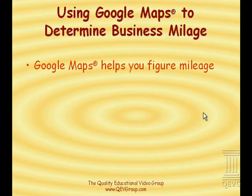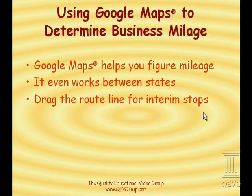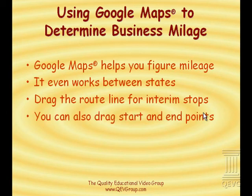So use Google Maps to help you figure out your business mileage even after you've made the trip. No need to panic ever again because you forgot to write down some deductible mileage. Just go to Google Maps and let them help you figure out what it was. Google Maps even works between states — for example, if you had a starting point in Maine and an ending point in Arizona, it will still work. You can drag that blue line to have as many interim stops as you need, and they can be as out of the way as you need. You can also use it to calculate different routes so that you can figure if one particular routing is shorter than another. Don't forget, you can also drag your starting and ending points and change them as well.